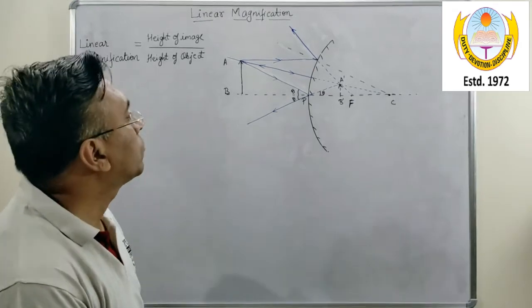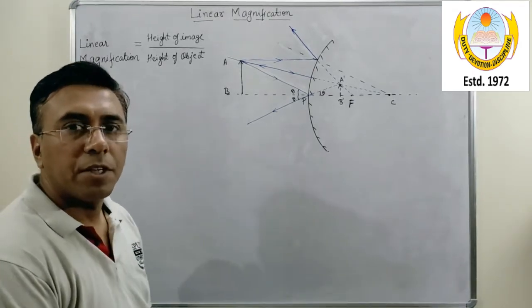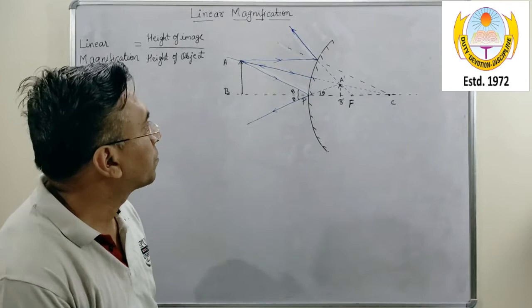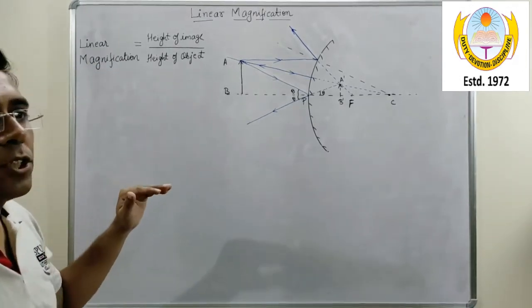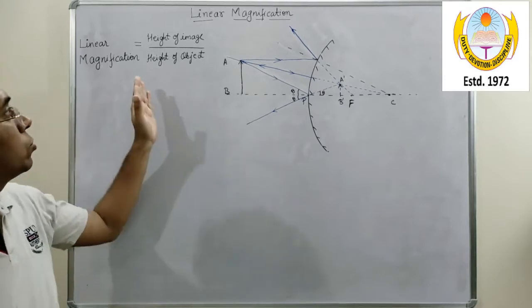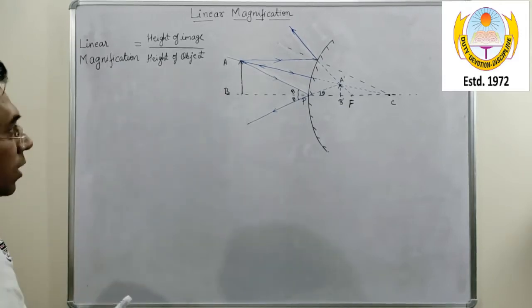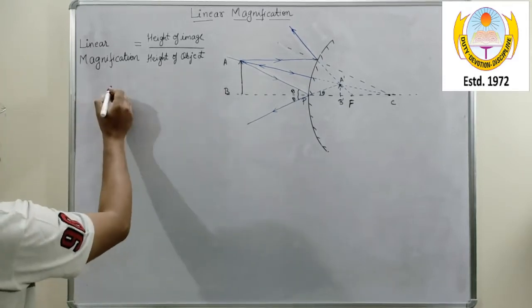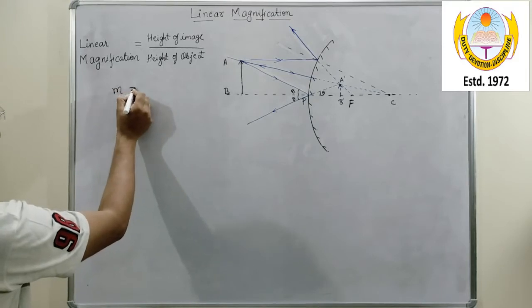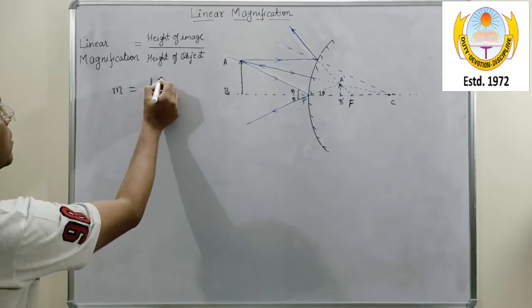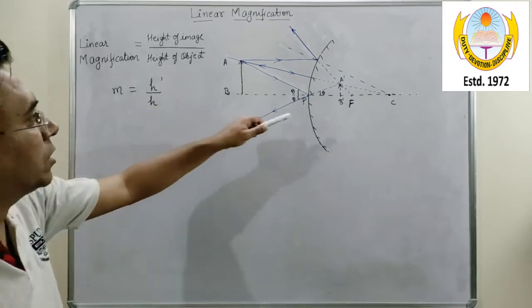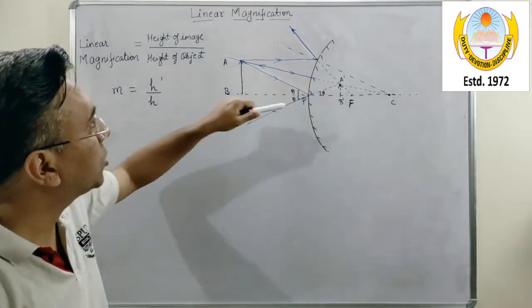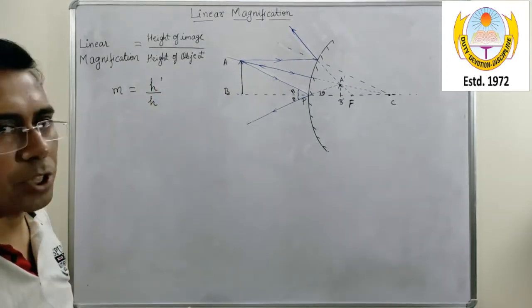Hello friends, in this video we will learn about the linear magnification of convex mirror. Now, linear magnification is defined as the ratio of height of image to the height of object, and it can be represented by small m. So m is h' upon h, where h' is the height of image and h is the height of object.